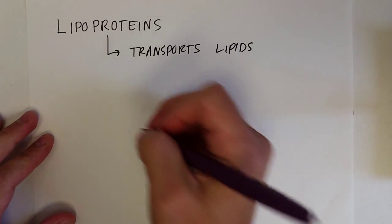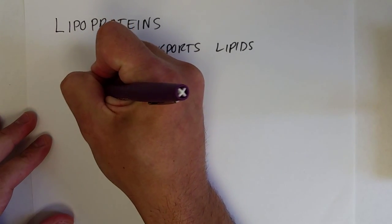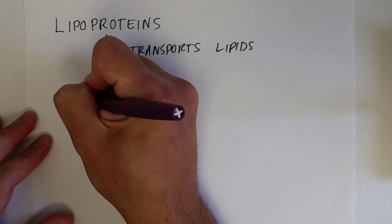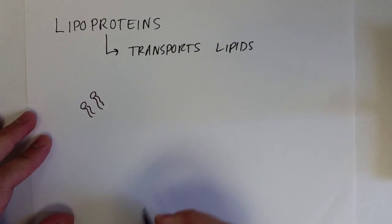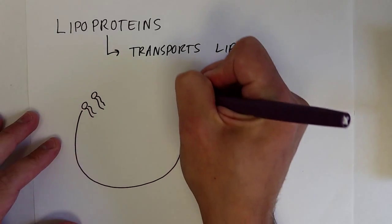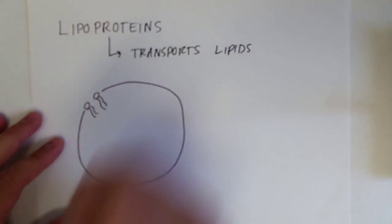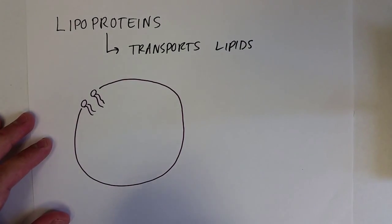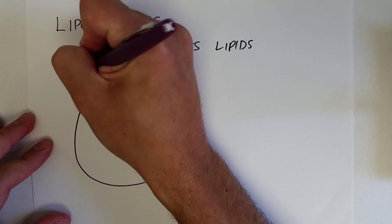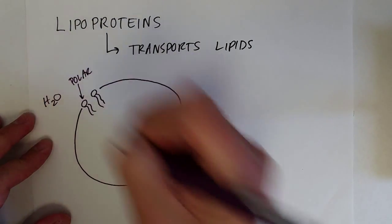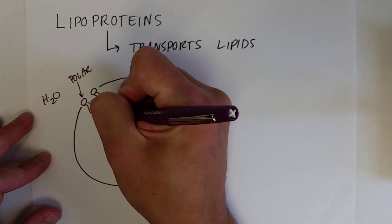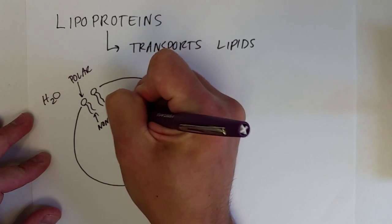Lipoproteins are basically a spherical structure with phospholipids surrounding the outside — a single layer of phospholipids with the polar group on the outside, because water is out there, and then the nonpolar region of the phospholipids on the inside.